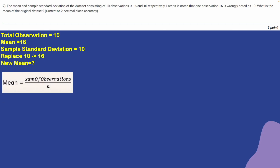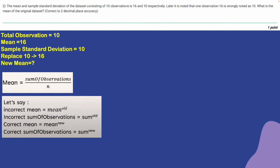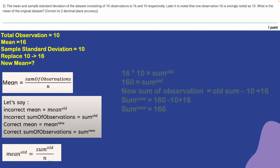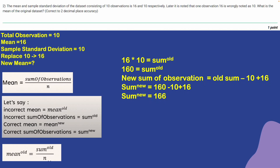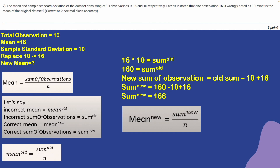We know mean equals sum of observations divided by total number of observations n. Let incorrect mean be mean_old and incorrect sum be sum_old; correct mean be mean_new and correct sum be sum_new. Sum_old equals mean_old times n, which is 16 times 10 equals 160. Sum_new equals 160 minus 10 plus 16 equals 166. Mean_new equals 166 divided by 10, which is 16.6.